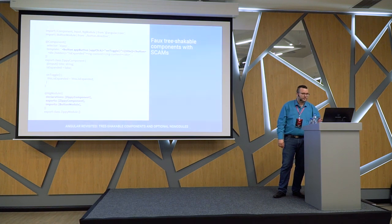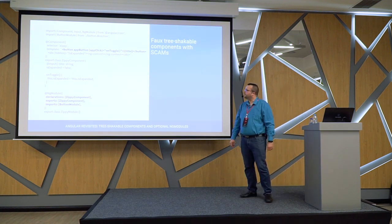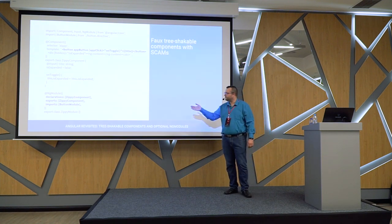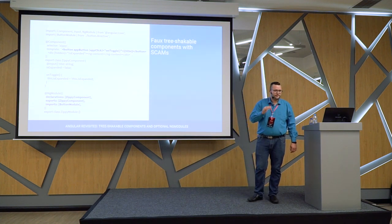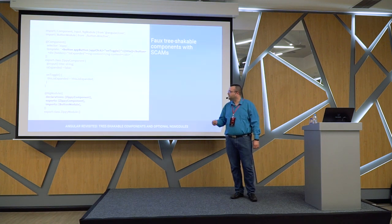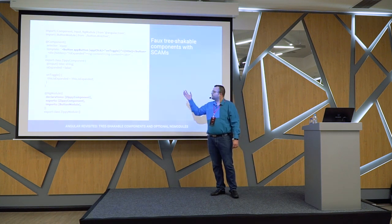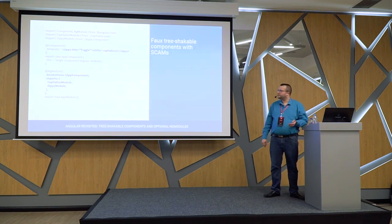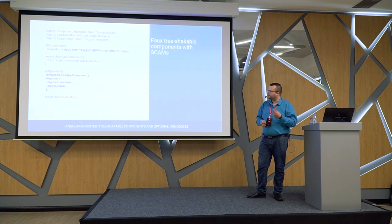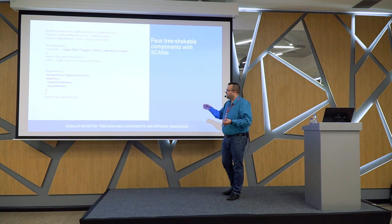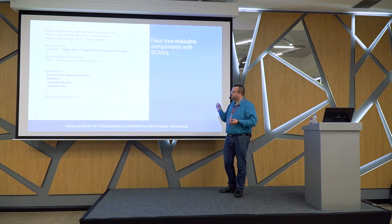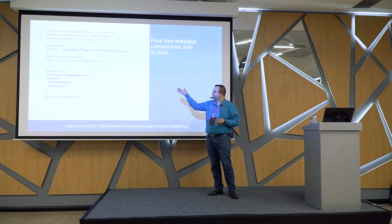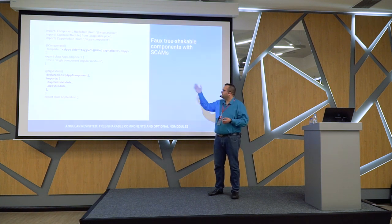So let's fake tree-shakable components using SCAMs. This is the same city component — we have a button directive, but the deps property is not there yet. So instead, let's create an Angular module. The only thing it declares is the city component, the only thing it exports is the city component, and the only things imported by that Angular module is what is actually used in its template — the button directive. So we need to import a button module, a SCAM for the button directive.